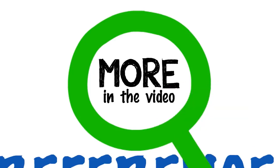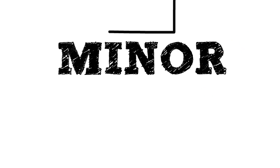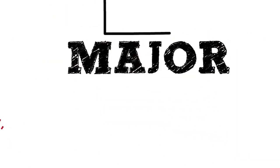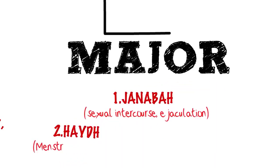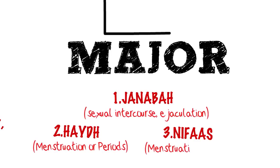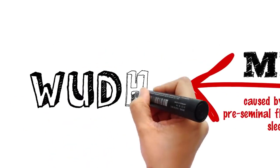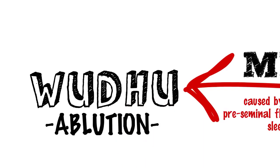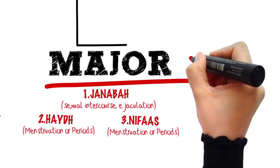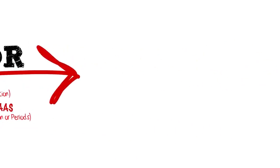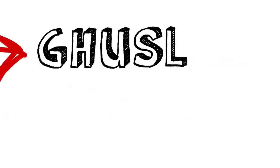There are two kinds of ritual impurities: the minor impurity and the major impurity, which occurs as a result of janabah, hayd, or nifas. To achieve tahara from the minor impurity, you only need to renew your wudu ablution, whereas in the case of major impurity, you need to take a ghusl.